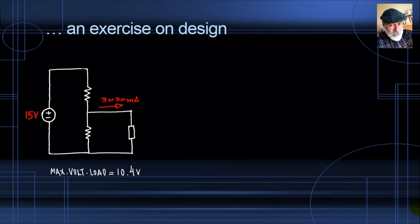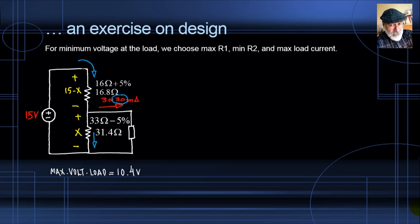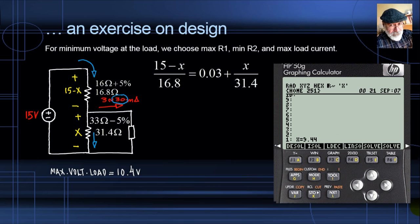For the minimum probable voltage, we choose maximum R1 = 16 + 5% = 16.8 Ω, minimum R2 = 33 − 5% = 31.4 Ω, and maximum load current of 30 mA. Writing and solving the KCL equation again gives a minimum load voltage of 9.44 volts. The actual voltage will be somewhere between 9.44 and 10.4 volts, depending on resistor values purchased and where in the duty cycle the device operates.